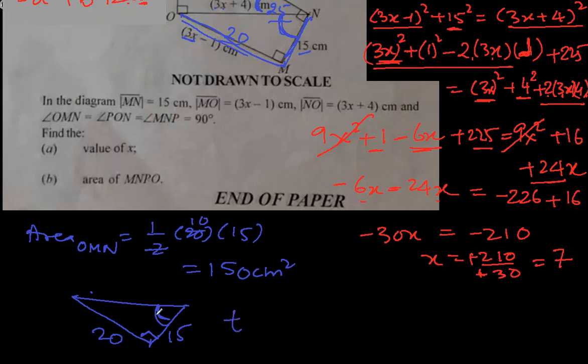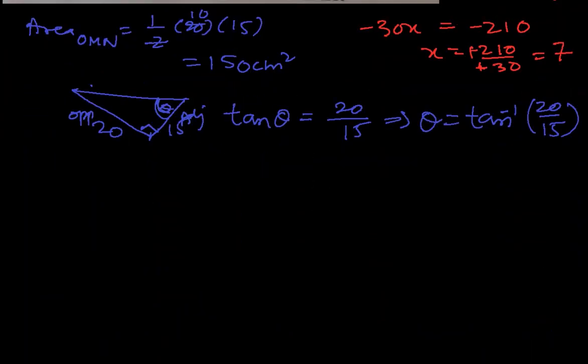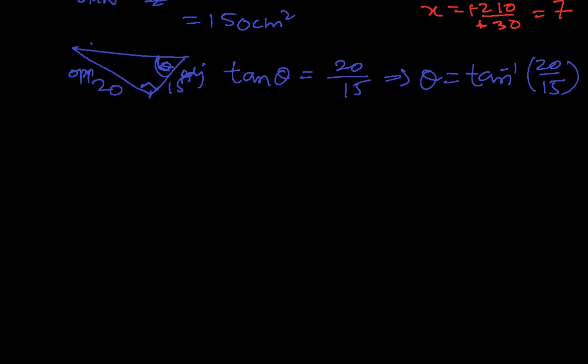I can use tan. Let's call it theta. So tan theta equal to opposite which is 20 divided by adjacent which is 15. So this gives us theta equal to tan inverse 20 over 15. Let's find that angle. By the time I calculate this, please subscribe to this channel so that I can make more videos for you in future. I got angle as 53.13.